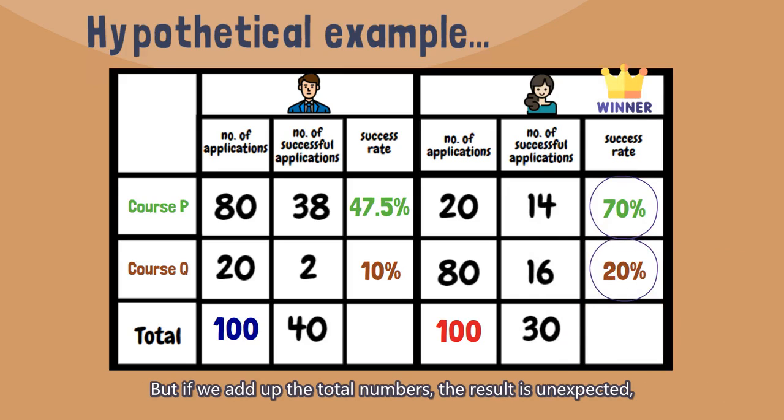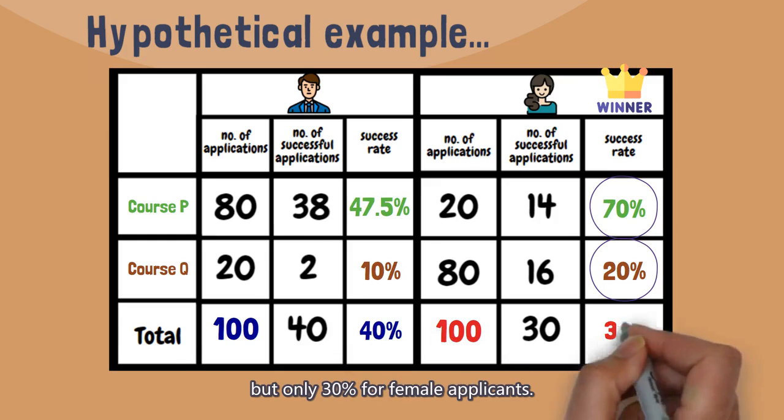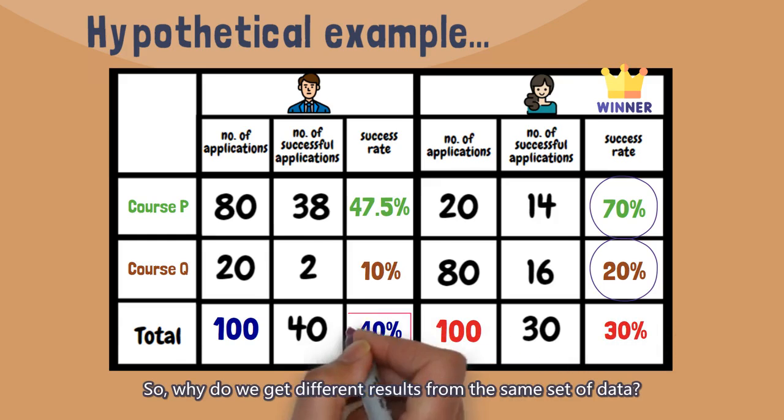But if we add up the total numbers, the result is unexpected, as the admission success rate is 40% for male applicants, but only 30% for female applicants. So, why do we get different results from the same set of data?